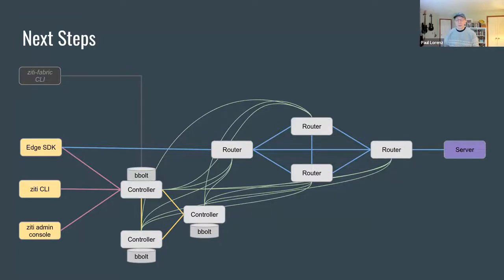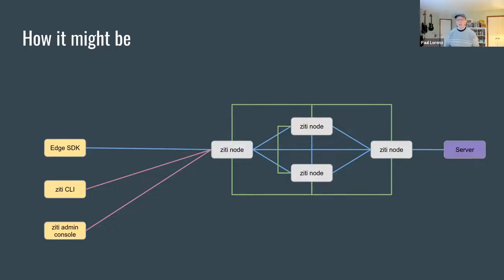As we move towards HA and distributed control, it's going to start to look more like this where we have multiple controllers, each of them able to talk to the router mesh. One of our goals is to try to make this more complex system still easy to manage. Longer term, it's possible that we'll move to something where we do more consolidation — consolidating the controllers and routers into a single instance type, with some of those routers and controllers being special in some way. But that's a north star rather than a next step.